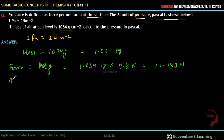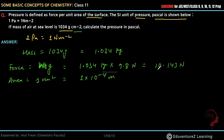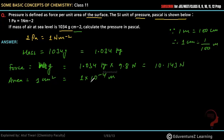अब area को हम लोग suppose करते हैं। यहां पर centimeter square में दिया हुआ है, तो area equals to 1 centimeter square. इसको meter में convert करेंगे तो 1 into 10 to the power minus 4 meter square हो जाएगा, क्योंकि 1 meter equals to 100 centimeter, इसलिए 1 centimeter equals to 1 by 100 meter. centimeter square है तो एक बार और multiply करना होगा, तो 1 into 10 to the power minus 4 meter square आ जाएगा.